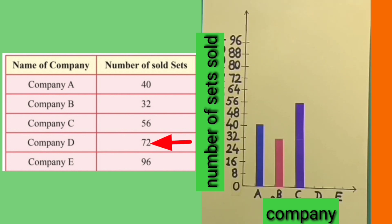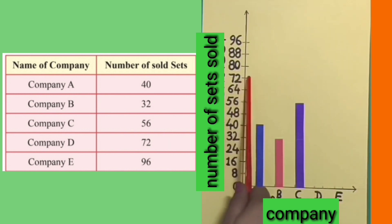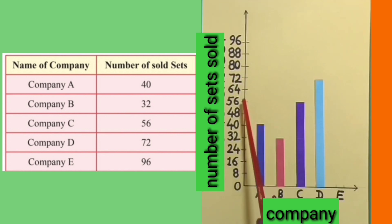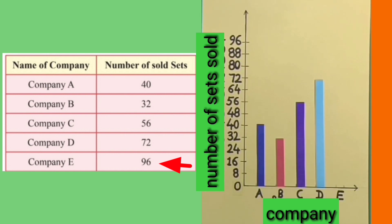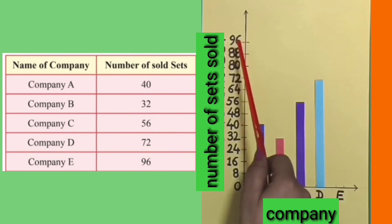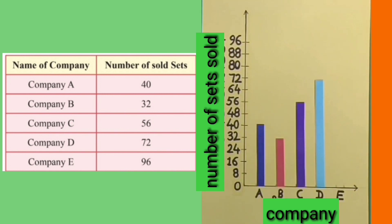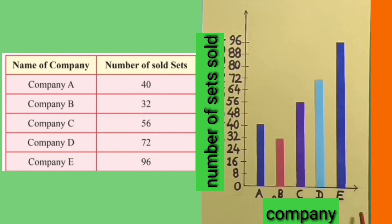Company D sold 72 sets. We will draw a rectangular bar for company D from 0 to 72 at the level of 72. This bar represents the number of mobile sets sold by company D. Company E sold 96 sets. To represent it on the bar graph, we will draw a rectangular bar from 0 to 96 at the level of 96. This rectangular bar represents the number of mobile sets sold by company E.